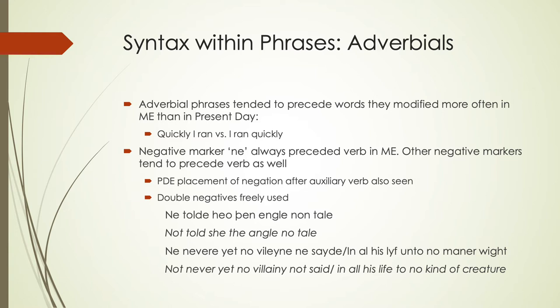Another example: 'Not never yet no villainy not said' — any time there is negation, everything has negation attached to it. This is very common in many languages of the world and relatively natural in English, commonly found in several dialects of English even today. This was very freely used throughout the Middle English time period, and there really wasn't any attempt to change or correct that until we get to the Early Modern period.